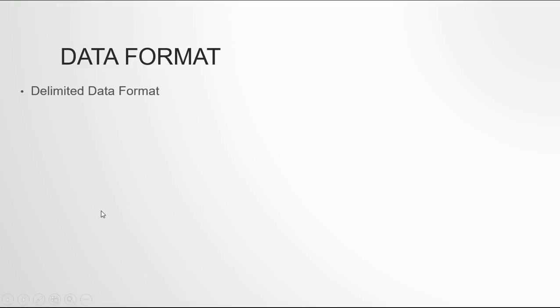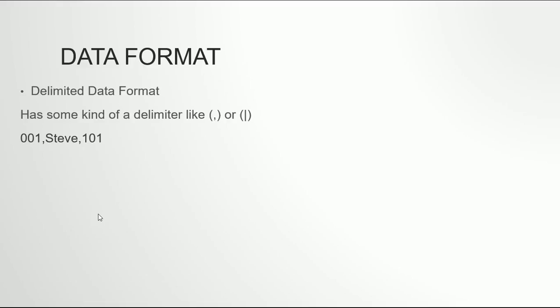Now, what data formats does the control file need to handle? As discussed in the previous video, the data file needs to be in a particular format — it can't just be in any random way. There are two ways in which you can have data in a data file. The first format is the delimited data format, where you have a delimiter — mostly a comma or a pipe symbol — though it is up to you to decide what delimiter you prefer.